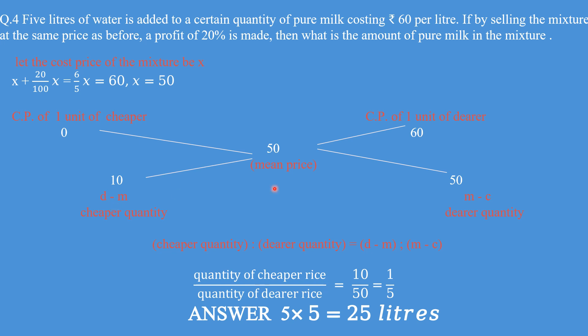D minus M is 60 minus 50 which is 10. M minus C is 50 minus 0 which is 50. In standard form: quantity of cheaper commodity upon quantity of dearer commodity is 10 upon 50, which is 1 upon 5. They are not asking the ratio — they are asking the amount of pure milk. Pure milk is the expensive item. So if the cheaper is 1 then the dearer is 5; if cheaper water is 5 liters then dearer milk is 5 multiplied by 5 which is 25 liters.